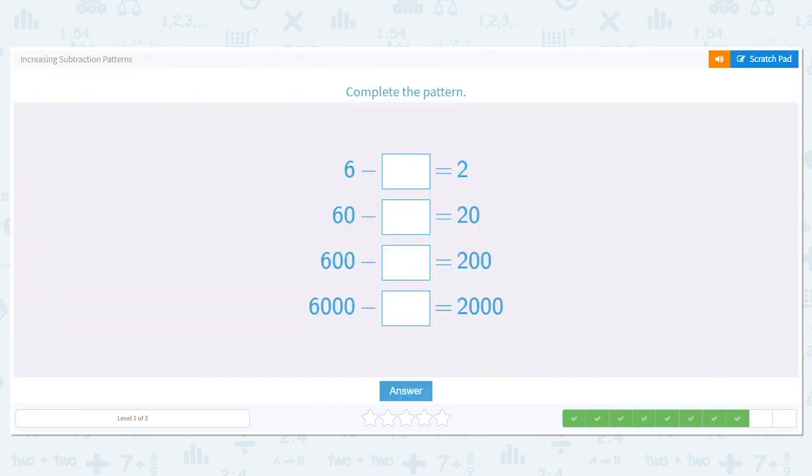Let's do another one. 6 minus blank equals 2. All right, let's use what we know. Let's rearrange because it's middle number we're missing. 6 minus 2 equals 4. So if that's a 4, what will 60 minus blank be to equal 20? 40. How about the next one? 400. And the last one would be 4,000. Look at the pattern. We're just adding a zero on every time to the place. And we're keeping the 4.